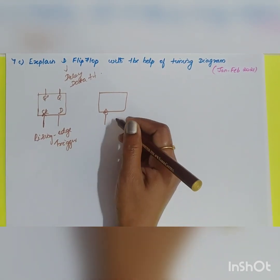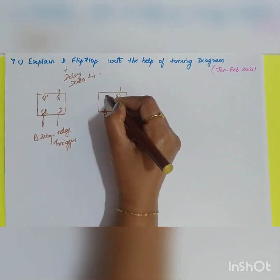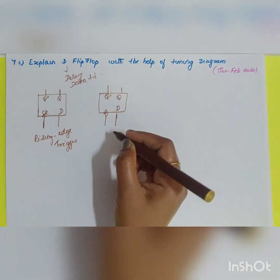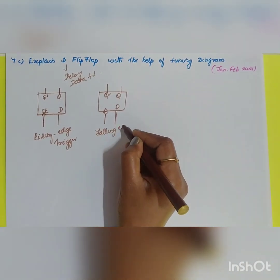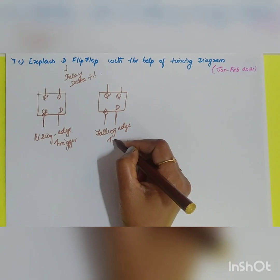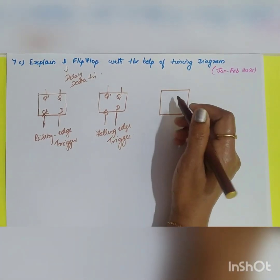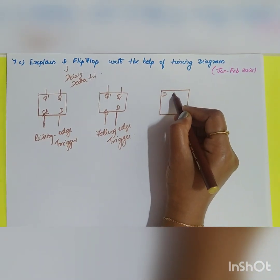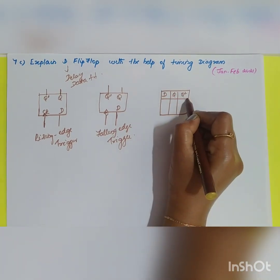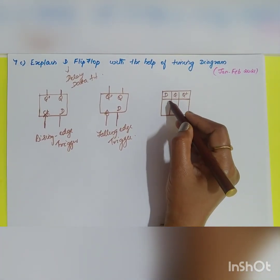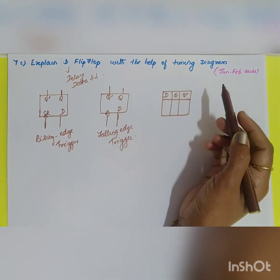For the falling edge trigger, the clock is represented with a bubble, indicating it triggers on the falling edge. The input is D, and the outputs are Q and Q dash. Whatever the input, the output remains the same but is obtained only after a certain delay — that is why it is called a data flip-flop or delay flip-flop.